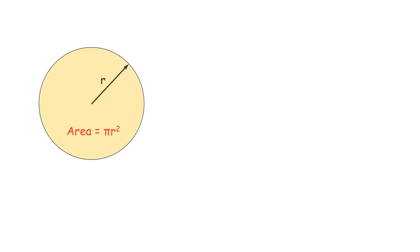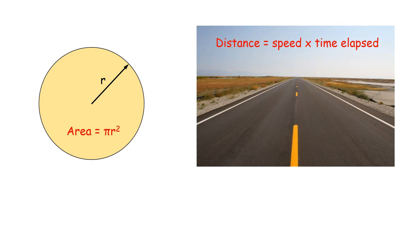Functions are a tool for describing the real world in mathematical terms. The area of a circle depends on the radius of the circle. The distance an object travels at constant speed along a straight-line path depends on the elapsed time.